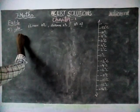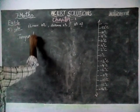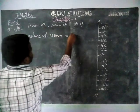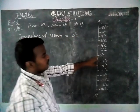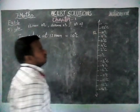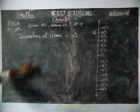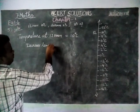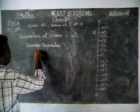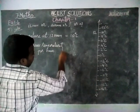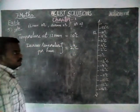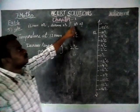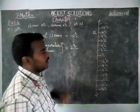Now we will see the first thing. Temperature at 12 noon is equal to 10 degree Celsius above 0, so we will take it as a positive integer. At 12 noon, 10 degree Celsius, and the decrease in temperature per hour is equal to 2 degree Celsius. Next, at what time will the temperature be 8 degree Celsius below 0? When we try to solve it using the number line, we can find the answer carefully.